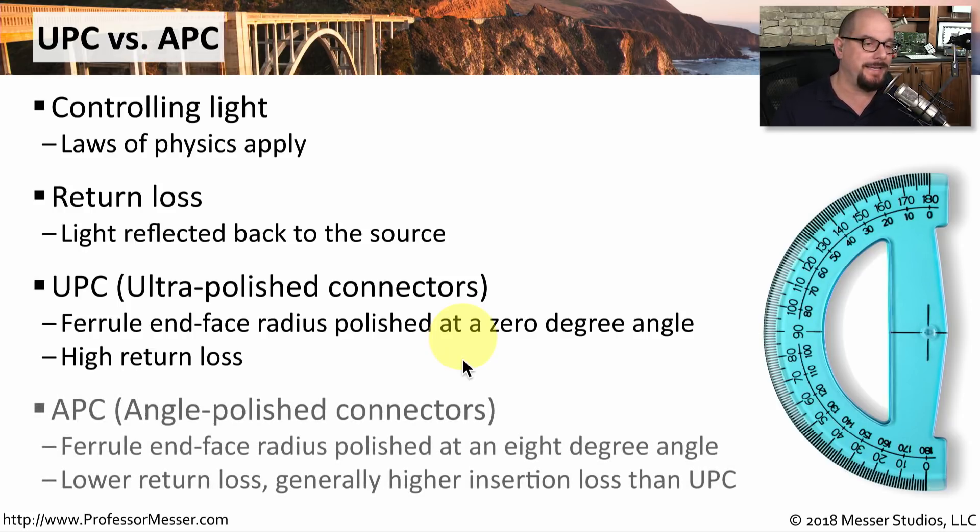The other type of connector you may see is an APC. This is an angle-polished connector where the ferrules connect to each other at a slight angle, so the reflection is a little bit different when you're using an APC. There will commonly be a lower amount of light returned to the source, but you're also losing a little bit more light on the connector itself.